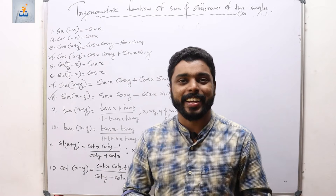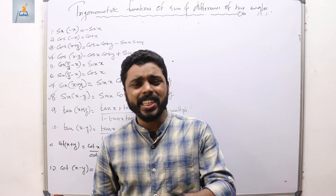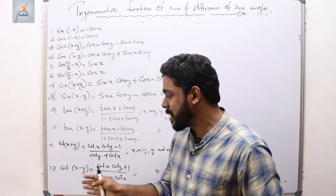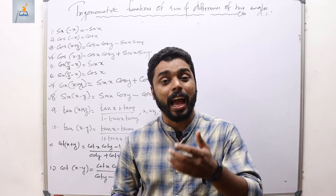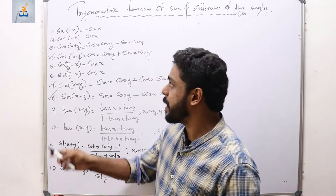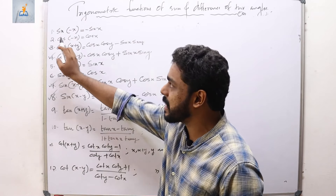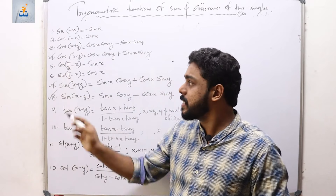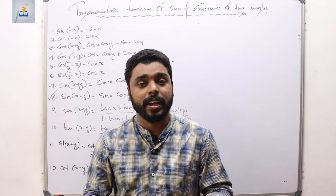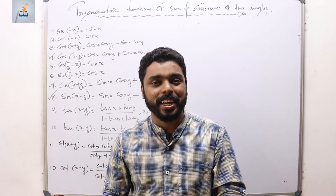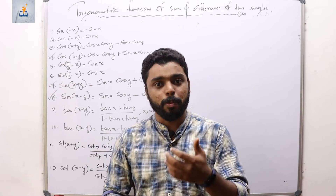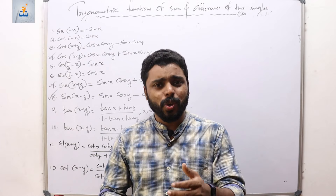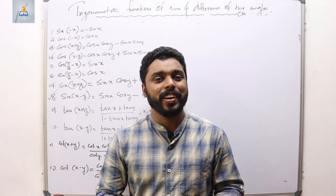These are the 12 trigonometric identities we learned today. I hope each and every one of them is clear. If you have any doubts, contact me, and make sure you understand the process of deriving them. All these identities arise from three fundamental ones, so if you forget any, you can re-derive it. In the next class we will derive more trigonometric identities, so make sure you are clear on these 12. Till then, bye-bye.